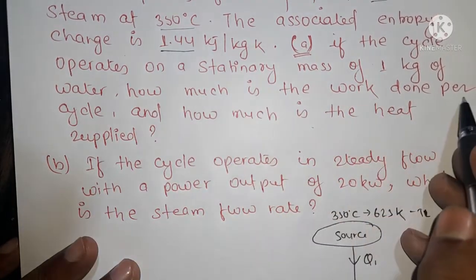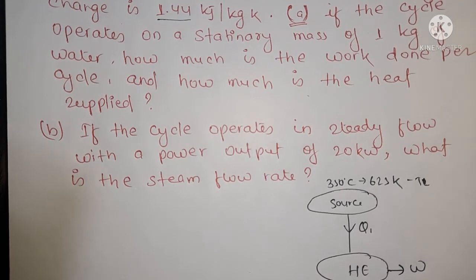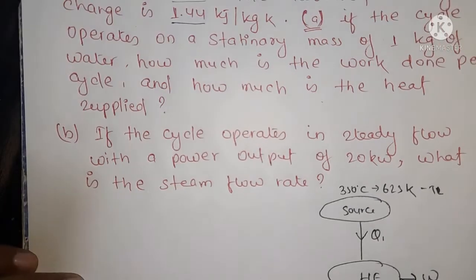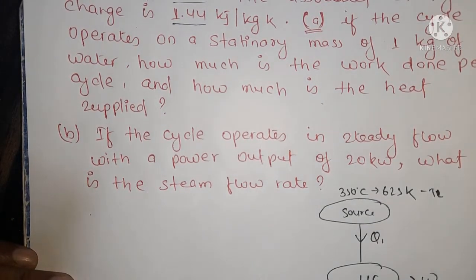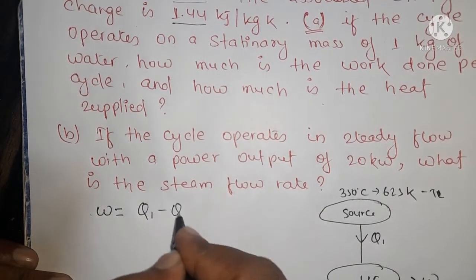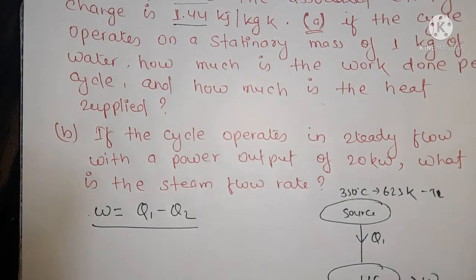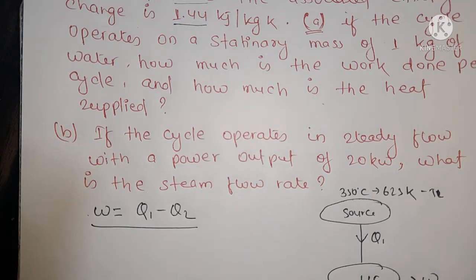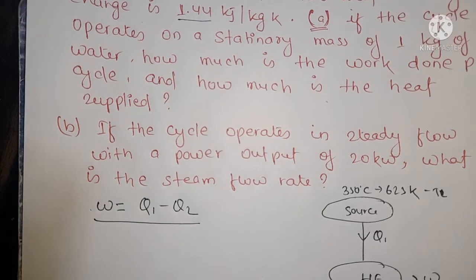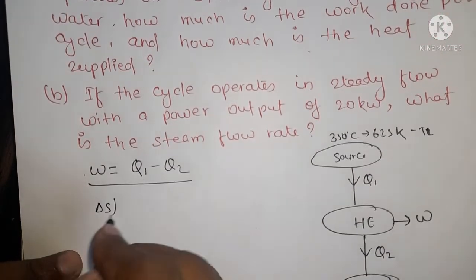How much is the work done per cycle? To find work, we use the formula W = Q1 minus Q2. First find Q1 value, then find Q2 value, then subtract to get the work output.